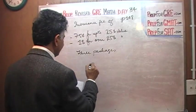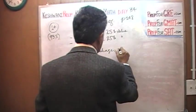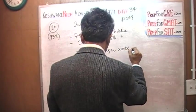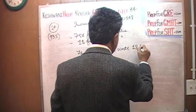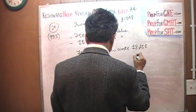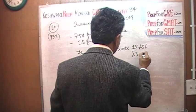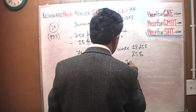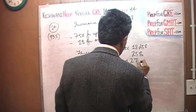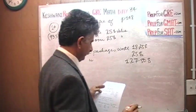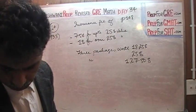We are sending 3 packages worth $18.25, $25 exactly, and $127.50. The question simply is, what is the cost of insurance?